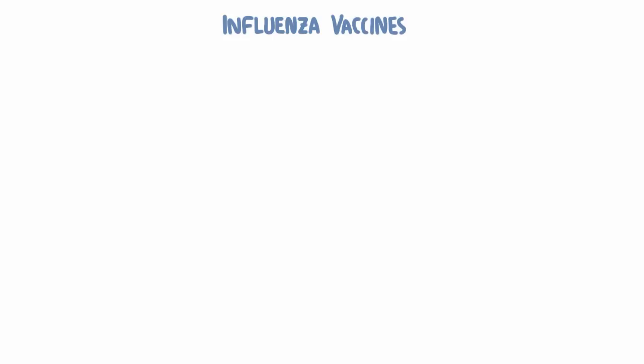The most important thing for you to know about the influenza vaccine is that it's one of the most dynamic vaccines available. It changes every year because of new antigenic variants produced by antigenic drift. And that means that the vaccine you received for last year's outbreak is not going to protect you from this year's outbreak.